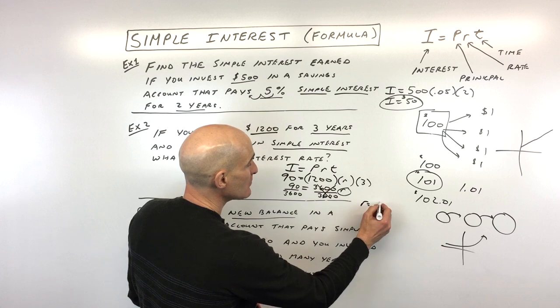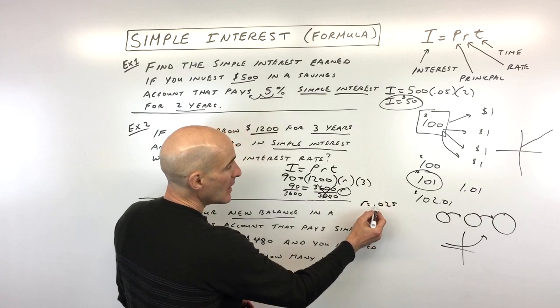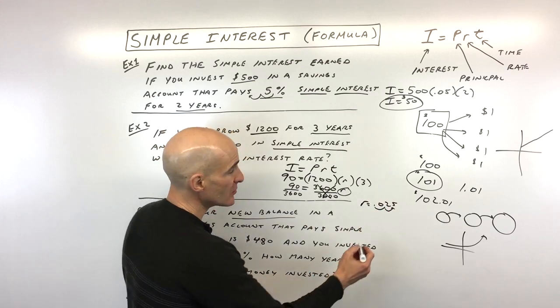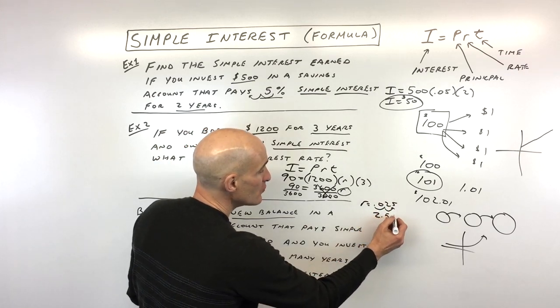90 divided by $3,600 is 0.025. So our interest rate is 0.025. But this is just a decimal. We have to convert it into a percentage by moving that decimal two places to the right. So that's 2.5%.